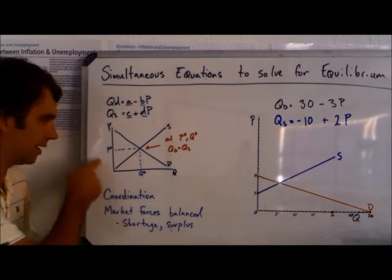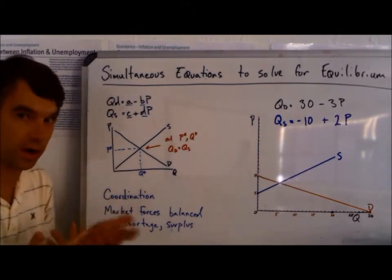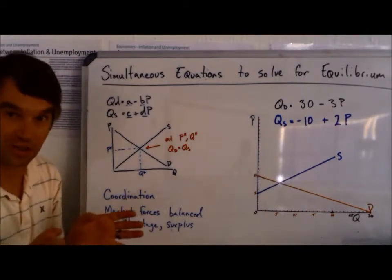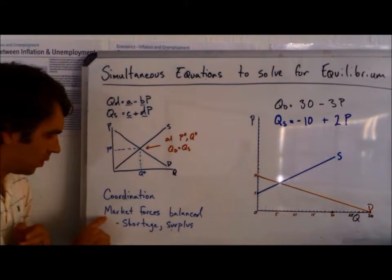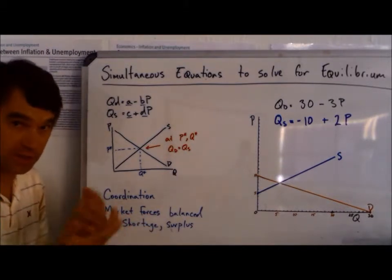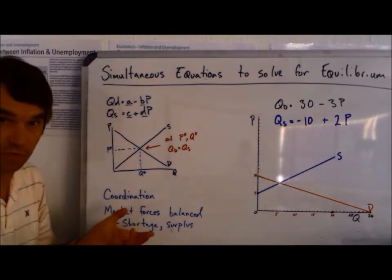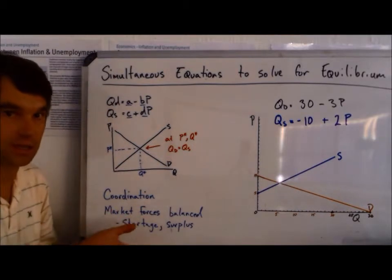They want the same quantity at the same price. And that's our basis of our defense of why the market is good. There's a lot of reasons the market is bad, but we'll talk about those eventually. So at this point, market forces are balanced. There is no surplus to get rid of. There's no shortage to overcome, and you have this nice balanced position in the market.